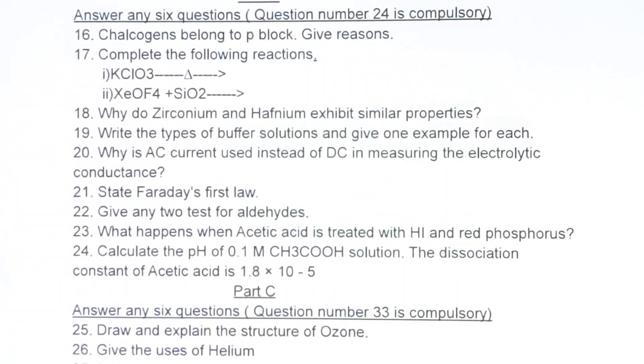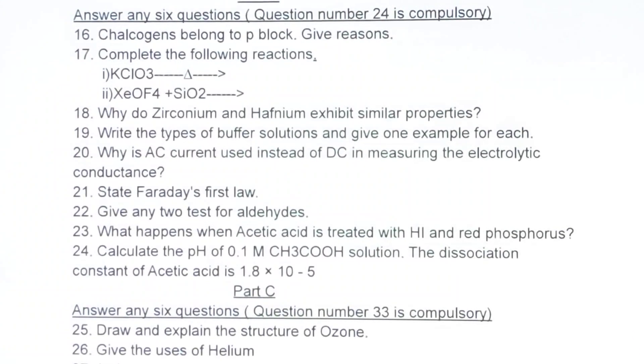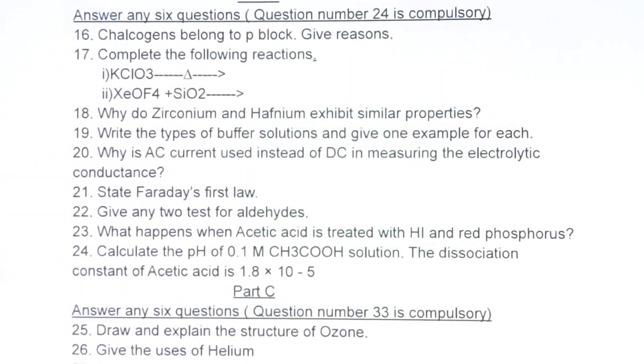Give any two tests for aldehydes. What happens when acetic acid is treated with HI and red phosphorus? Calculate the pH of 0.1M acetic acid solution. The dissociation constant of acetic acid is 1.8 × 10⁻⁵.